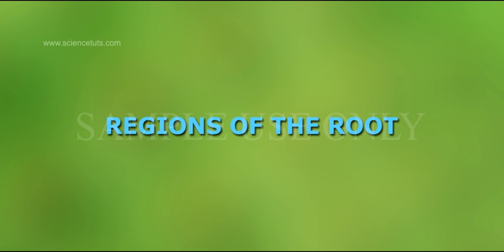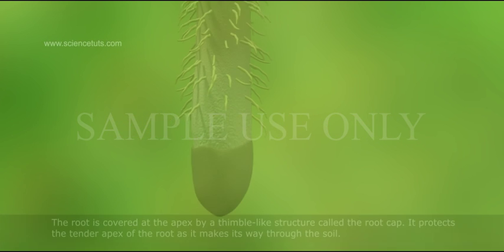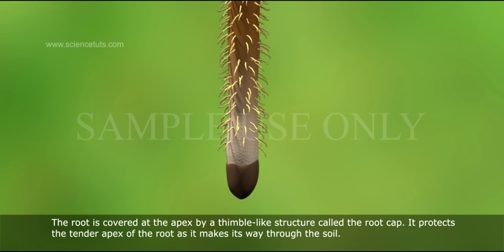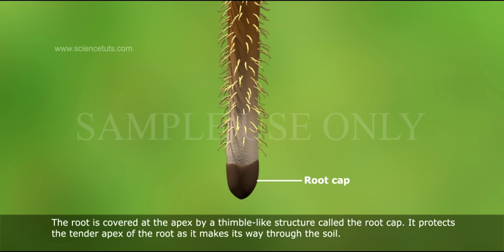Regions of the Root. The root is covered at the apex by a thimble-like structure called the root cap. It protects the tender apex of the root as it makes its way through the soil.